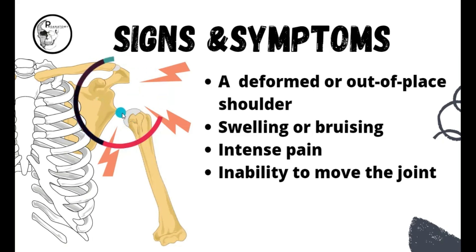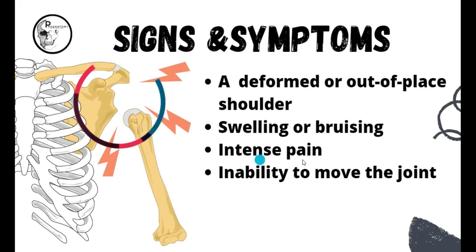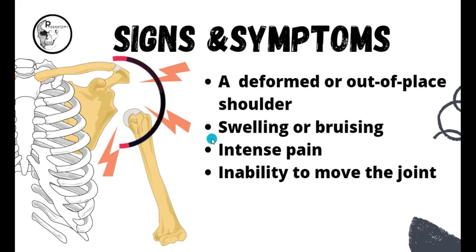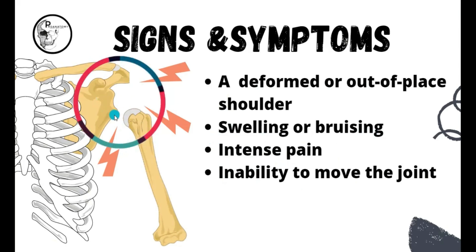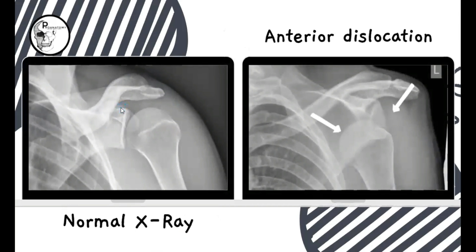This is a typical case of inferior dislocation of the shoulder joint. In this case there will be a deformed or out-of-place shoulder, inability to move the joint, and intense pain associated with it. In a short while there will also be swelling or bruising in the shoulder region. These are the signs and symptoms of shoulder dislocation. Now let's see the different types.